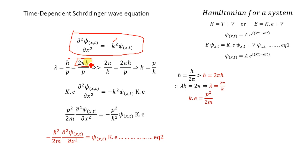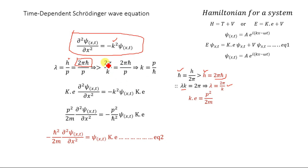We know that λ·k = 2π, so λ = 2π/k. Substituting into λ = 2πℏ/p, we get 2π/k = 2πℏ/p. The 2π cancels, giving us the wave vector k = p/ℏ.